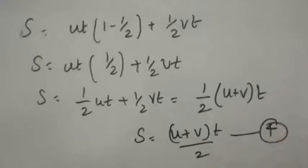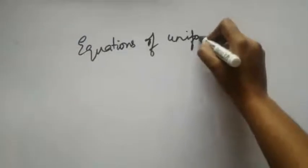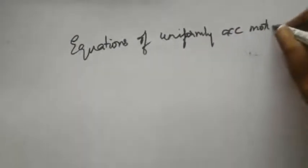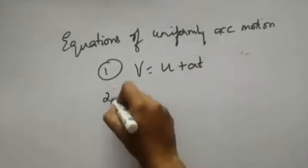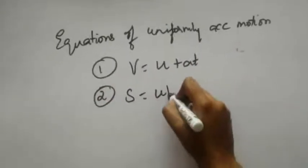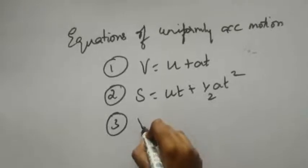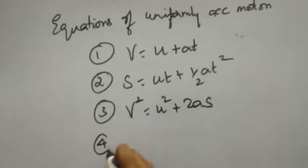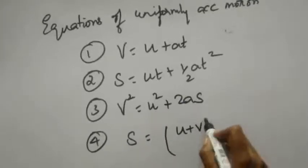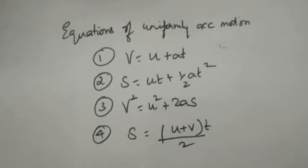So the displacement s equals (u plus v) into t by 2. This is the fourth and final equation of kinematics. To summarize, the four equations of uniformly accelerated motion are: first, v equals u plus at; second, s equals ut plus half at square; third, v square equals u square plus 2as; and fourth, s equals (u plus v) into t by 2. I hope you have understood. Please subscribe to my channel.